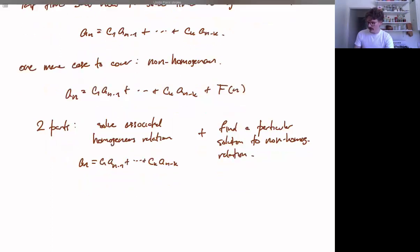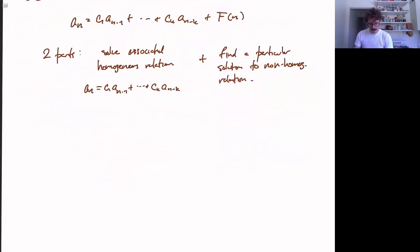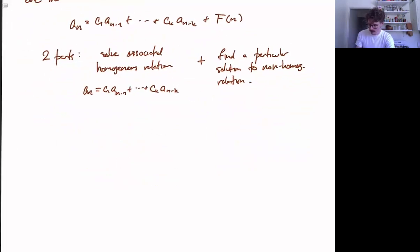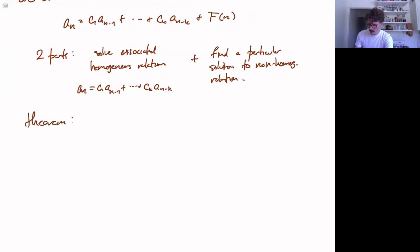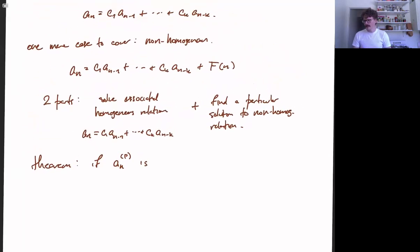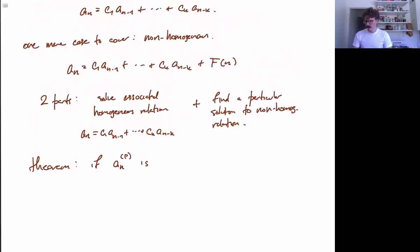So the point is that every solution can be got from a single solution by adding solutions to the homogenous relation. So let's write that down as a theorem. So theorem. If a n upper p for p for particular. And in case this wording is a little bit confusing, by a particular solution, we don't really mean anything special by that. We just mean a solution to this full recurrence relation, the non-homogenous version. It doesn't really matter which one.